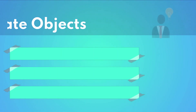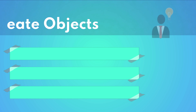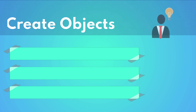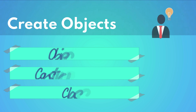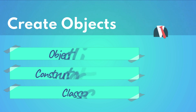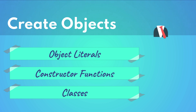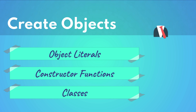In this course, we will learn how we can create objects in JavaScript using three different methods: object literals, constructor functions, and classes. We will deeply focus on the first one, but we'll cover the other two and also have some exercises to better understand all three options and what are the best scenarios for each.